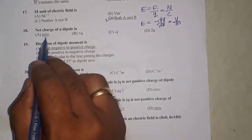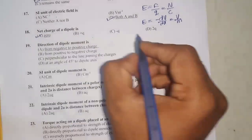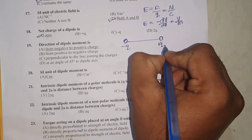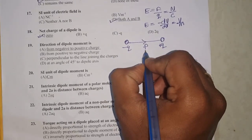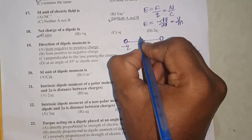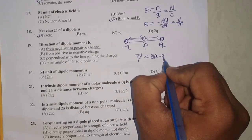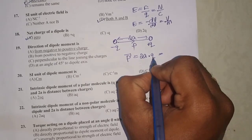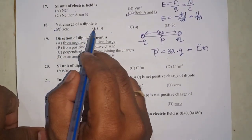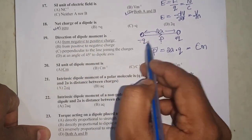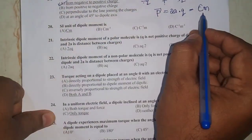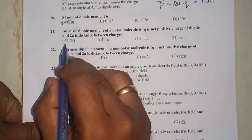Question number 18: the net charge on a dipole is zero, because a dipole is a pair of equal and opposite charges. Question number 19: the direction of the dipole moment is from negative to positive charge. The dipole moment is the product of the magnitude of charge and the distance of separation: p = q × 2a. The SI unit is coulomb meter. Therefore, option A is the correct answer.